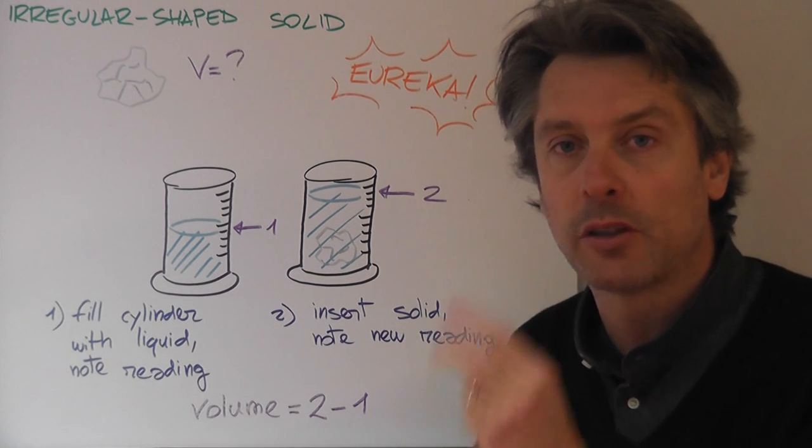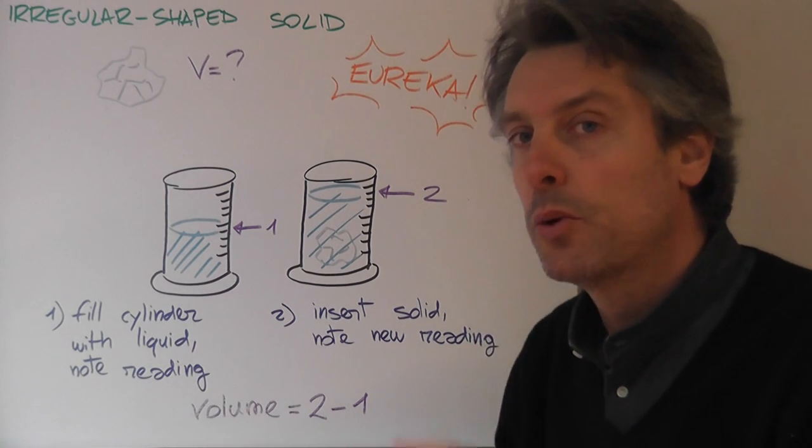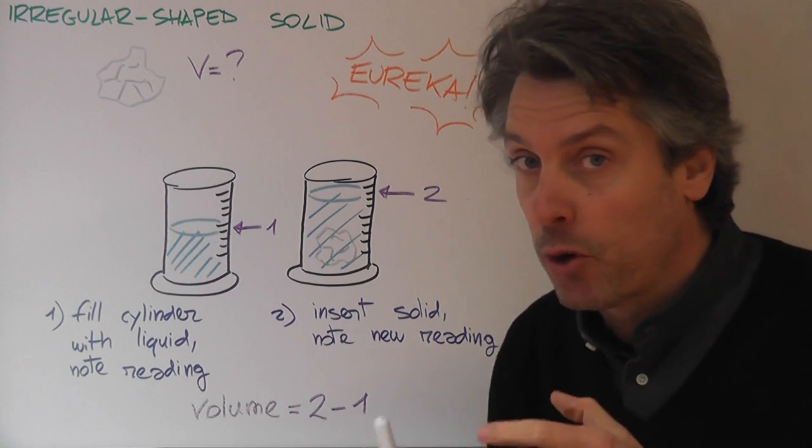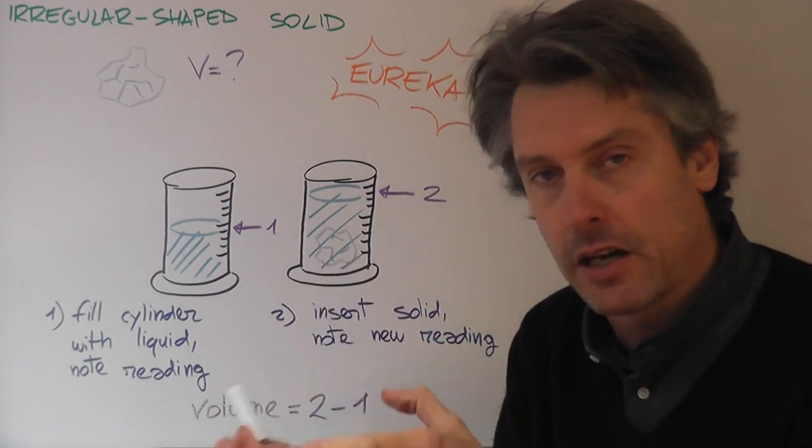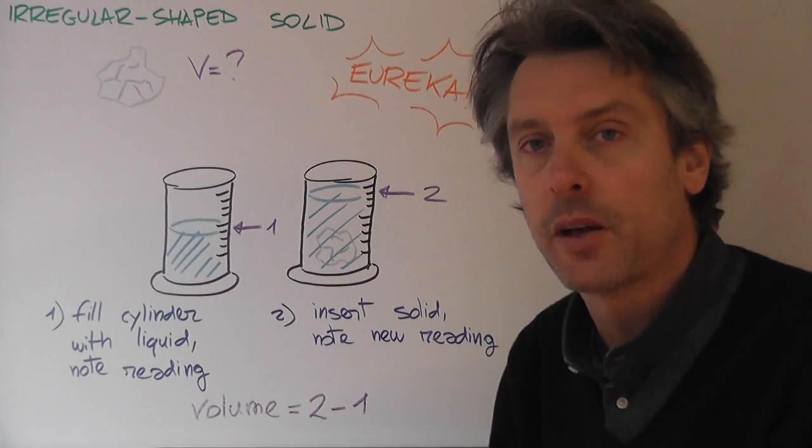In this case, we have to do a two-step process. In step number one, we take, again, a measuring cylinder. A measuring cylinder, which, of course, has to be wide enough to accommodate our object inside. We fill it with a liquid.